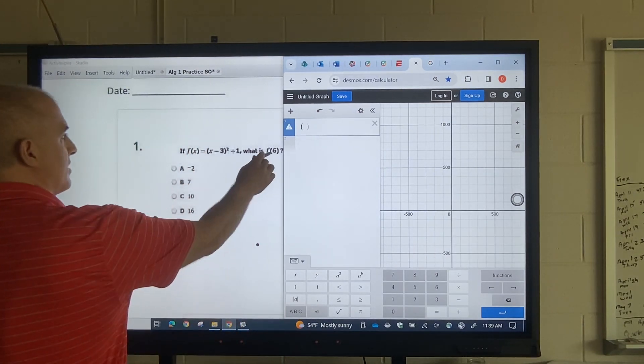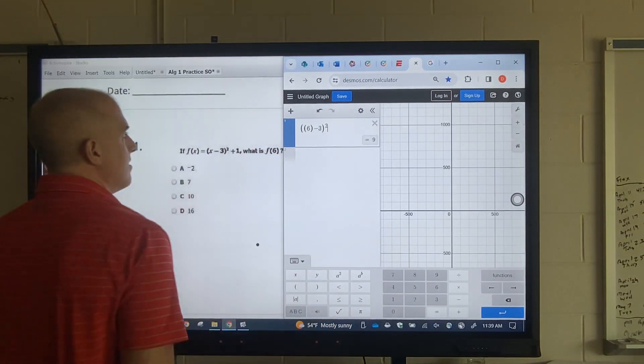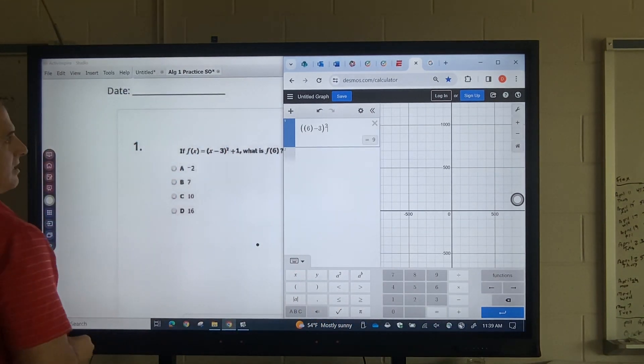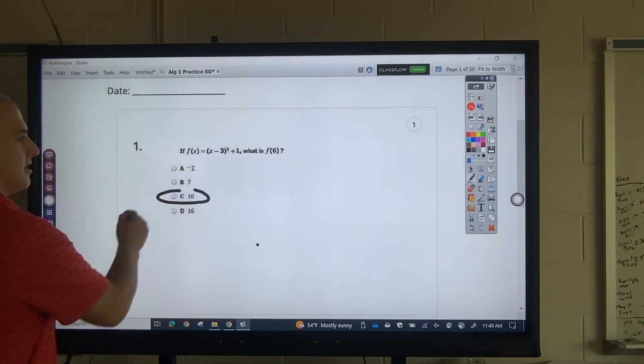Okay, so what I'm doing is I'm putting 6 where X is, minus 3 squared. Okay, all I got to do is plus 1. I substitute that in, I get 10. That's my answer.